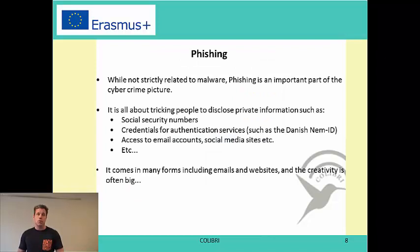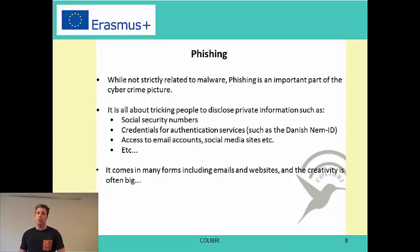Phishing is another topic — while not strictly related to malware, it is an important part of the current threat picture. Phishing is about tricking people into disclosing private information such as social security numbers or credentials for authentication services. In Denmark, for example, there is NemID — translated roughly as ECID — which is used for banks, public authorities, electricity bills, and many other purposes. A recent example is an email claiming there is an error with your NemID and asking you to send your codes for validation. While few people fall for it, some always do, and therefore it works.